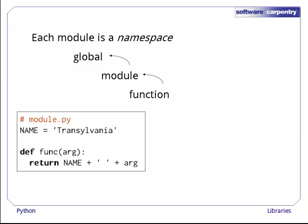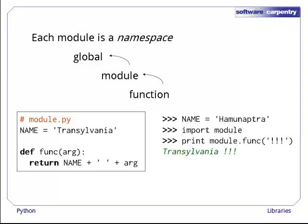For example, let's create a file called module.py that defines a variable called name, and a function called func that prints it out. In our main program, we also define a variable called name, then import our module. When we call module.func, it sees the name variable that was defined inside the module, not the one that was defined globally. This module-first rule makes it safe to load libraries that were written independently, without worrying about whether their authors might have used the same names for things.